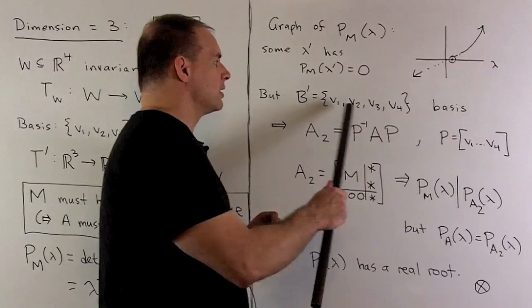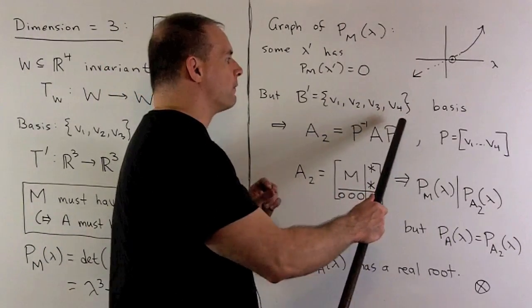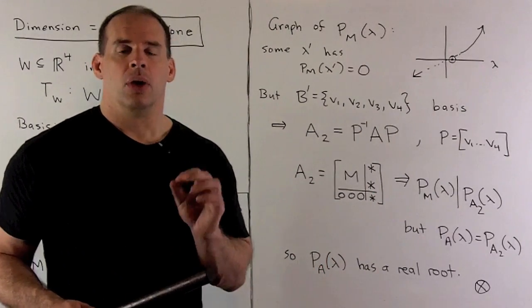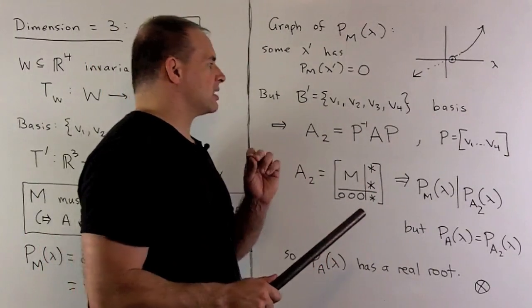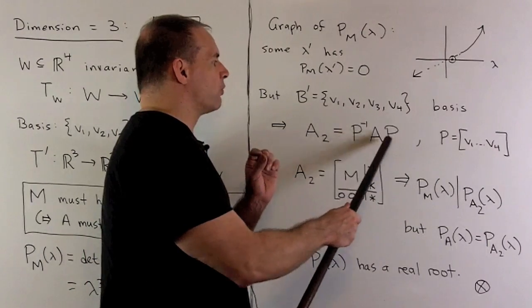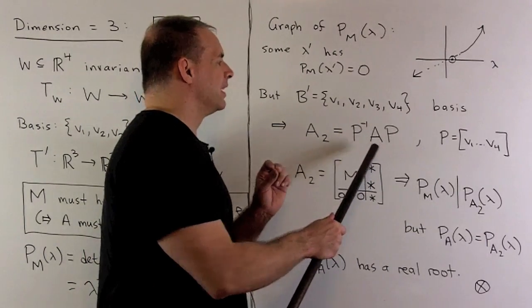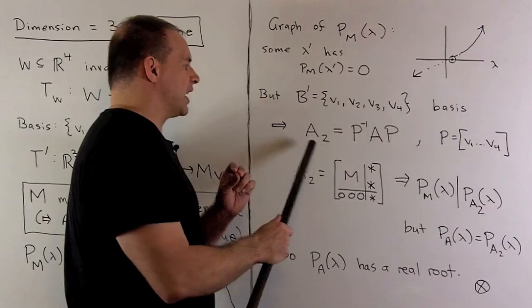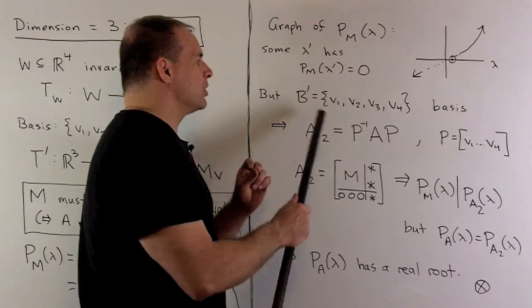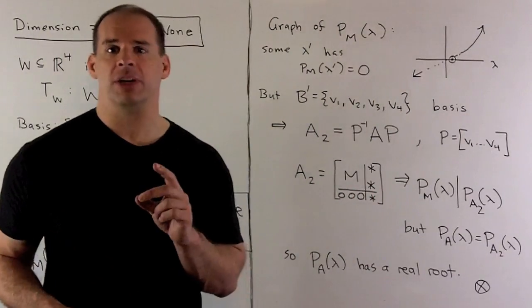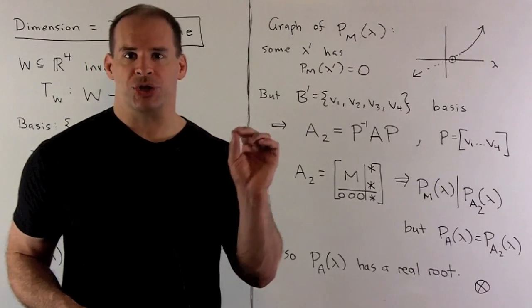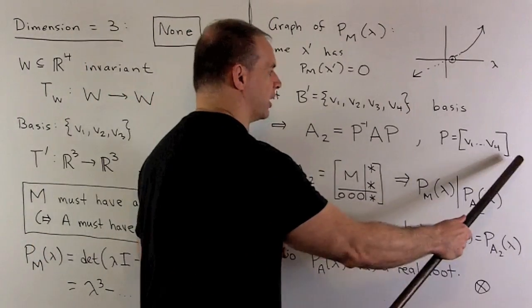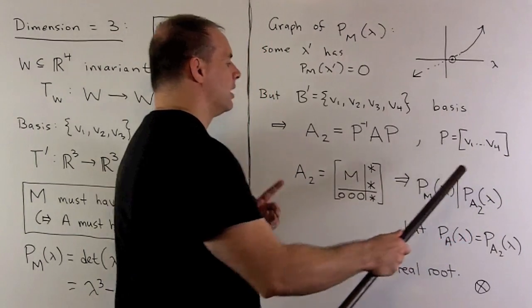Now, I want to show how that means A must also have a real zero. If we take our basis, complete it to a basis of R⁴ by adjoining a V₄, what happens? We know with respect to the standard basis, T is going to be represented by the matrix A. With respect to our new basis, it's going to be represented by some matrix A₂. And because these represent the same linear transformation, that means these matrices are similar. And the relation is by our basis matrix here.